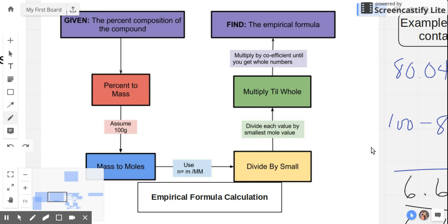What if we don't get a whole number when we divide the smaller, the smallest mole value by all the values? What do we do?